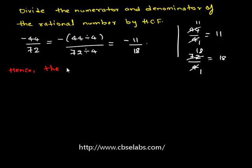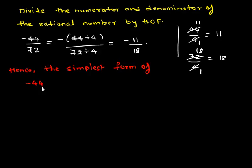Hence, the simplest form of negative 44 upon 72 is negative 11 upon 18.